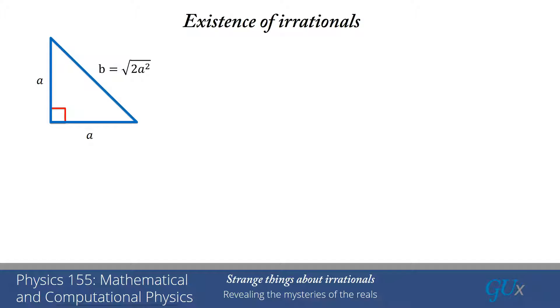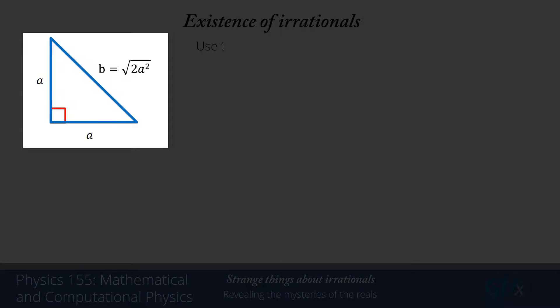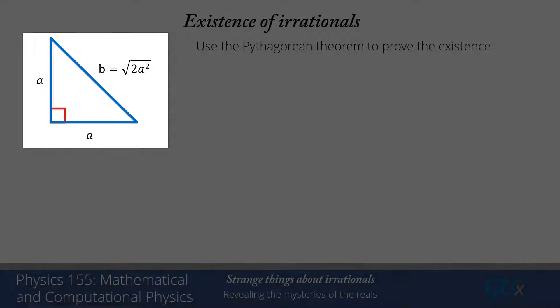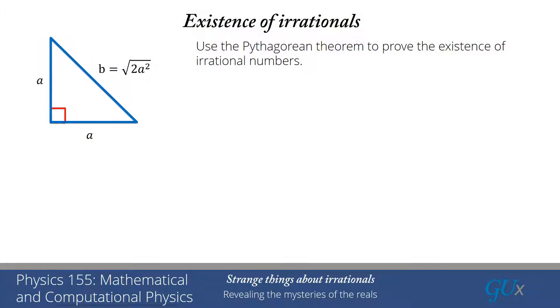We can show a nice simple proof that irrationals must exist, and it comes from applying the Pythagorean theorem to this isosceles right triangle. As you remember from the Pythagorean theorem, the square of the hypotenuse, which would be b squared, is equal to the sum of the squares of the legs. So we know that b is the square root of 2a squared, or b is equal to square root of 2 times a.